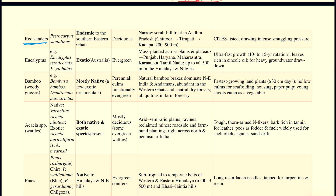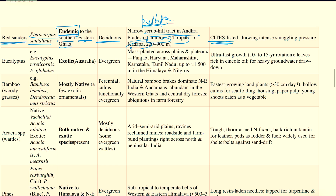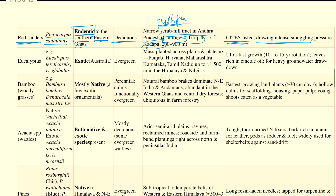Continuing with Red Sanders, whose scientific name is Pterocarpus santalinus — it is endemic, meaning it is not only native but found only in that particular area, that is, the southern part of the Eastern Ghats. It is a deciduous tree found in the hill tracts of Andhra Pradesh — the Chittoor-Tirupati-Kadapa districts. It is CITES listed. Just try to find out under CITES into which category it is classified. It also draws intense smuggling pressure.